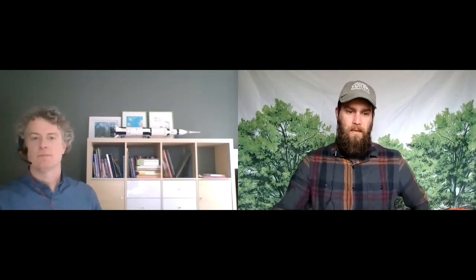So is that a process that happens in one season or over multiple seasons? It typically happens over multiple seasons. The young larvae feed under the bark until they are big enough to pupate, and when they are ready to emerge as adults, they chew their way out of the tree and fly around to mate, lay eggs, and repeat the cycle.